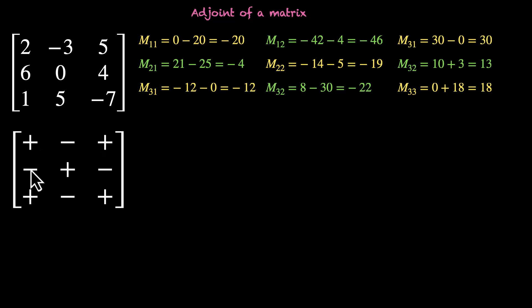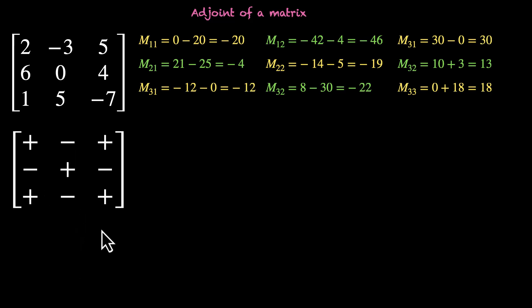The sign pattern alternates: plus, minus, plus, minus, plus, minus, plus, minus, plus, minus, plus. We do this by the formula minus 1 to the power i plus j, where i is your row number and j is your column number.